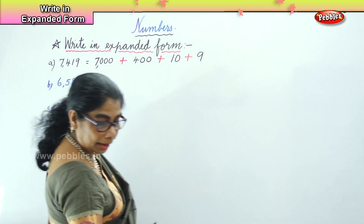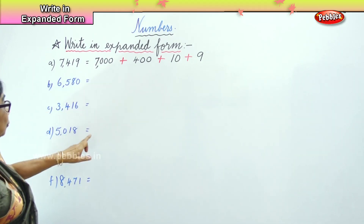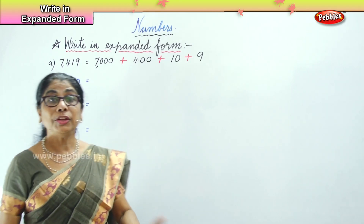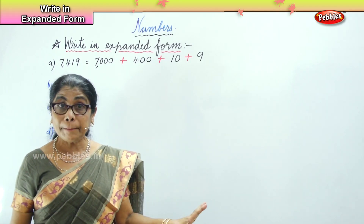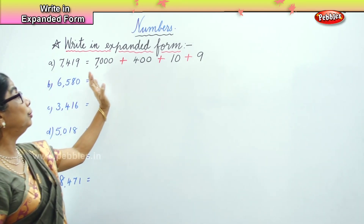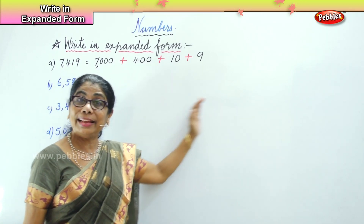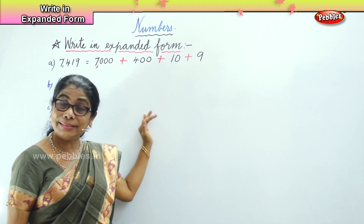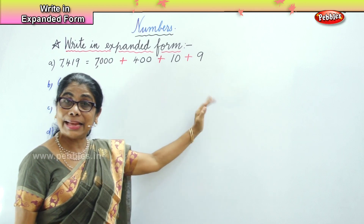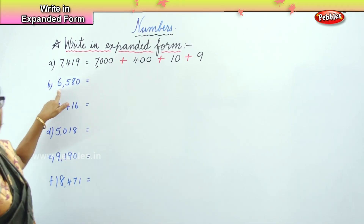Here we have one, two, three, four, five numbers. You are given five numbers and you are going to do expansion in thousands, hundreds, tens and ones. Let's take the first number here.